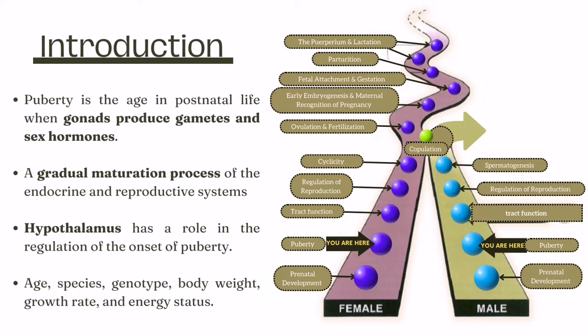The hypothalamus plays a vital role in the regulation of the onset of puberty. The onset of puberty depends on many aspects like age, species, genotype, body weight, growth rate, and energy status.